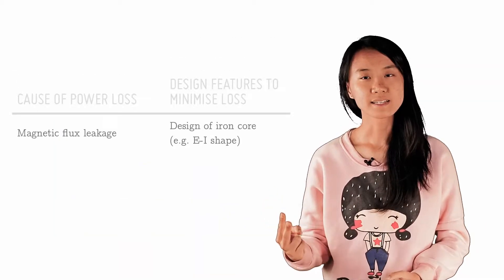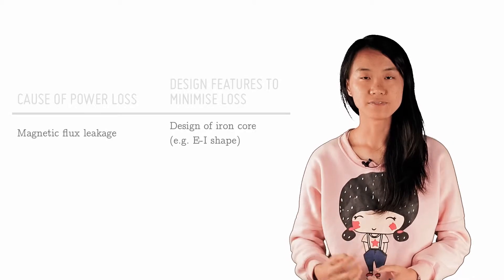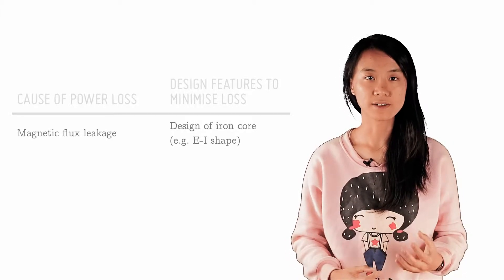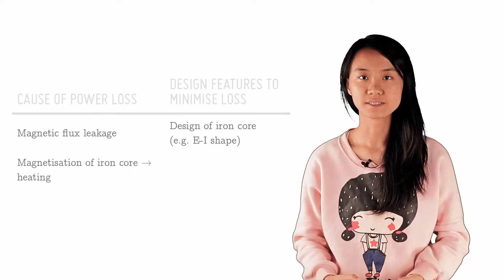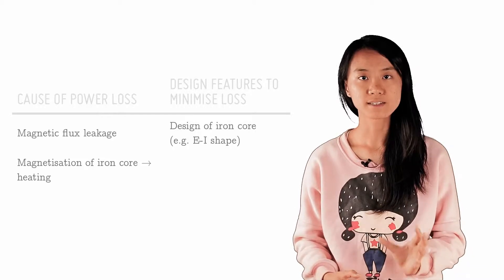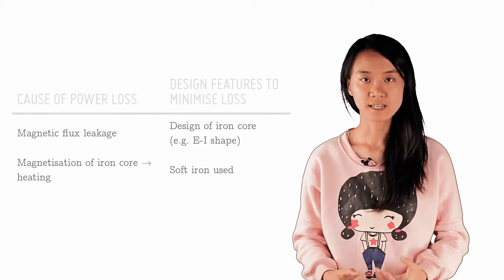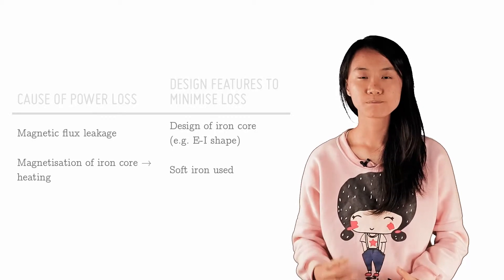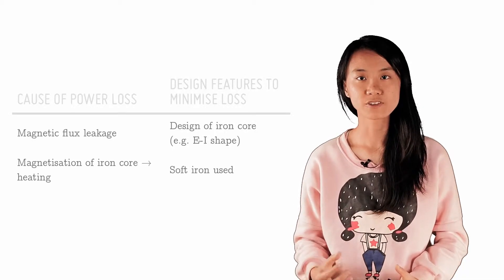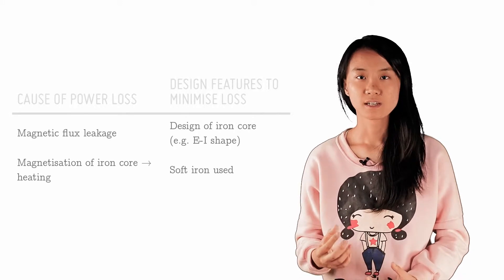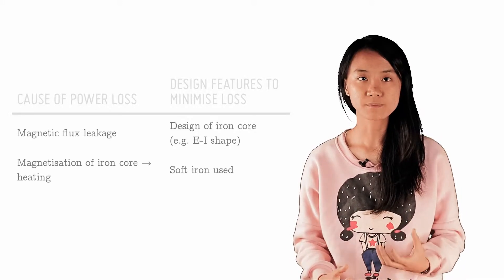Secondly, in the process of magnetizing the iron and reversing the magnetization whenever the current reverses, energy is used, heating up the iron core, resulting in more power losses. Soft iron is used because it is easily magnetized and demagnetized, so the direction of magnetism can change rapidly with the change of the currents, hence reducing the power loss.